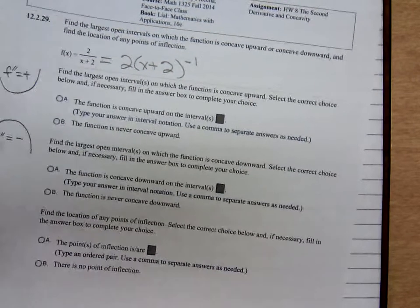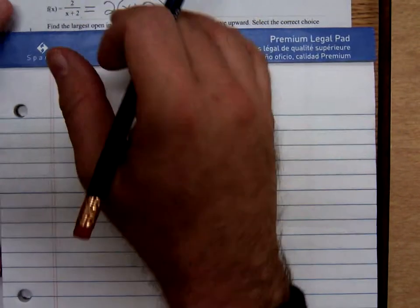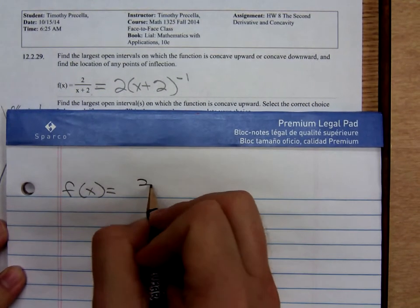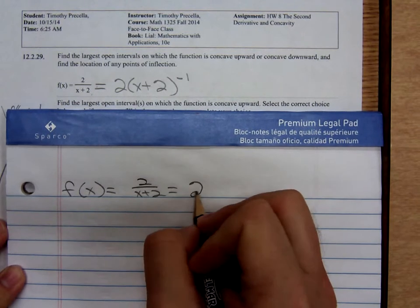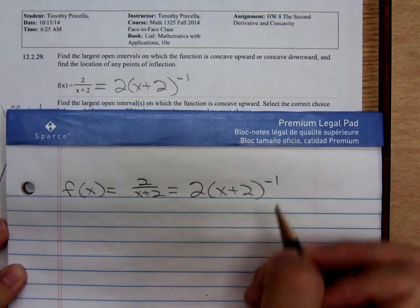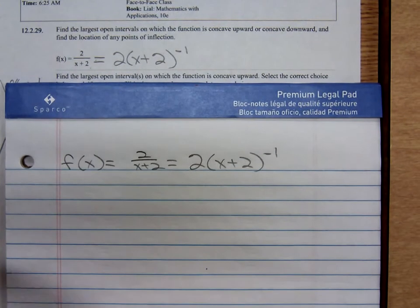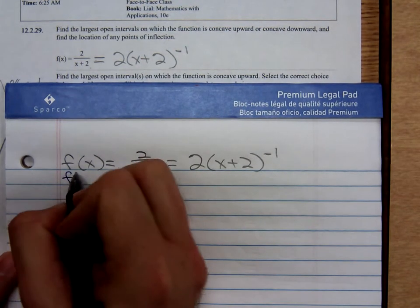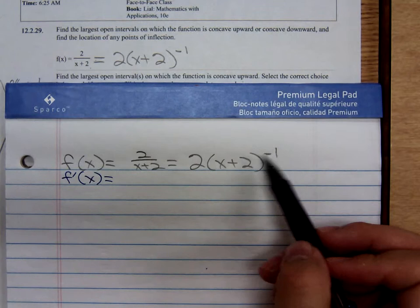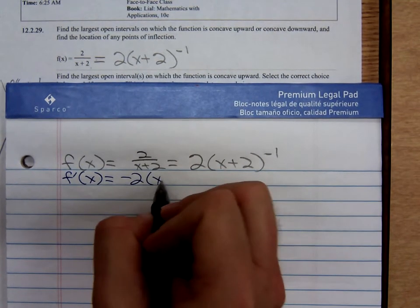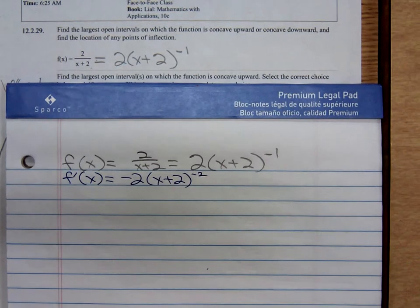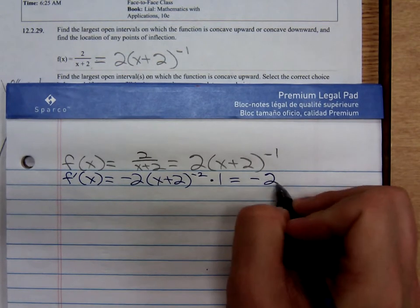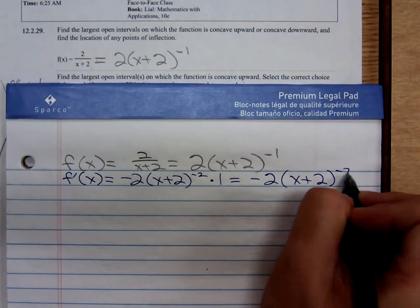Differentiating, let me write that down here, we have f(x) is 2 over x plus 2 which is the same thing as 2 times x plus 2 to the negative 1 power. And find f prime using the generalized power rule. That would be a negative 2 times x plus 2 to the negative 2 times the derivative of the inside. The derivative of the inside is just a 1. So we have a negative 2 times x plus 2 to the negative 2 power.